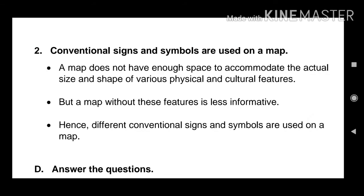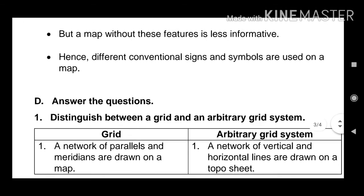Conventional signs and symbols are used on a map. Give reason. A map does not have enough space to accommodate the actual size and shape of various physical and cultural features. But a map without these features is less informative. Hence, different conventional signs and symbols are used on a map.